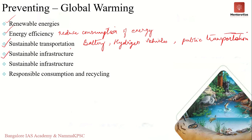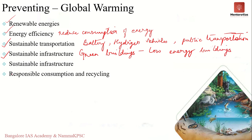Then we have sustainable infrastructure — opting for green buildings and low-energy buildings, which help save energy, cut down on pollution, and reduce greenhouse gas emissions. It is important to understand what green buildings are, how they are beneficial, and what policy measures exist to promote them — including what Karnataka and India are doing towards green buildings and how construction activities should change to combat climate change.